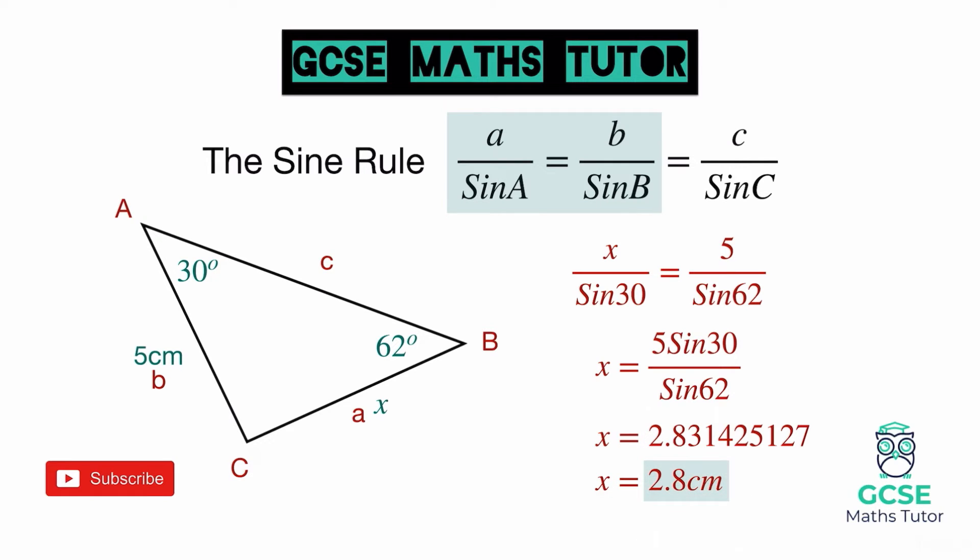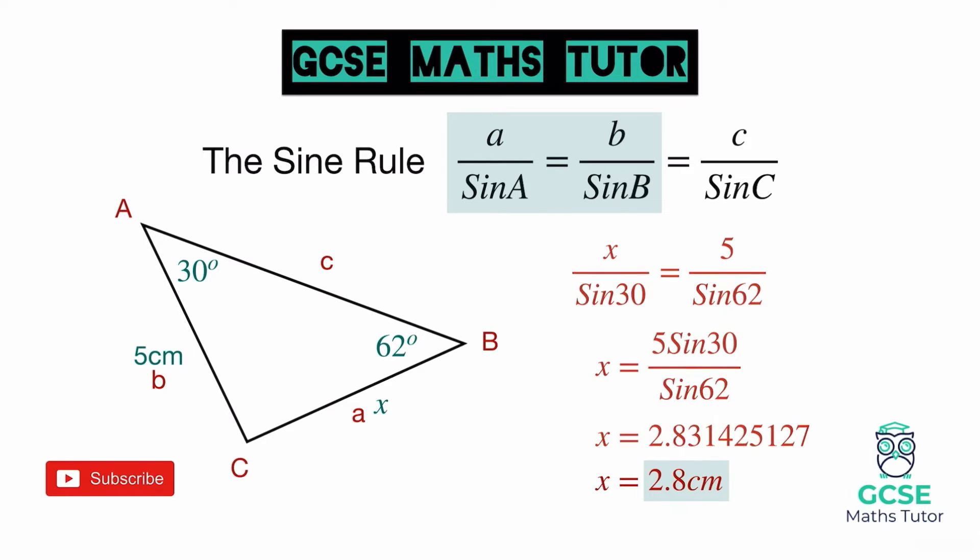That is the sine rule for working out lengths. If you are working out an angle, there is a different form where you flip the fractions — instead of a over sine A, you use sine A over a, and the same for b and c. If you're unsure on how to approach that, check out the full video linked in the description.